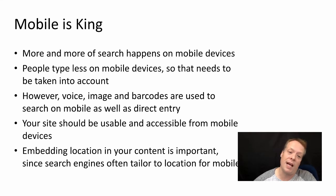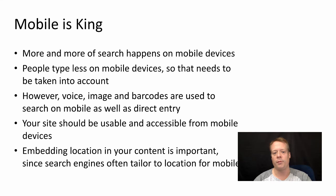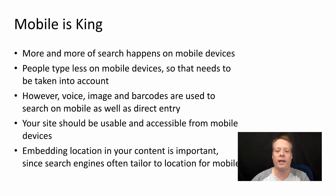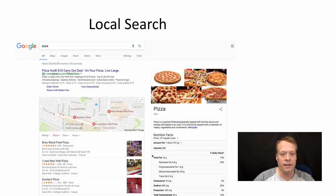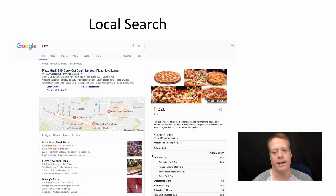Mobile is king — more and more search happens on mobile devices. People type less on mobile, so searching by voice, imagery, and barcodes is done much more often nowadays, meaning you have to adapt to those new methods of communicating with a search engine. Your site should be useful and accessible for mobile devices. Embedding location in your content is also important, since mobile search engines are tailored to the user's location. For example, typing just the word 'pizza' while at NC State in Raleigh immediately returns pizza restaurants in the nearby area.